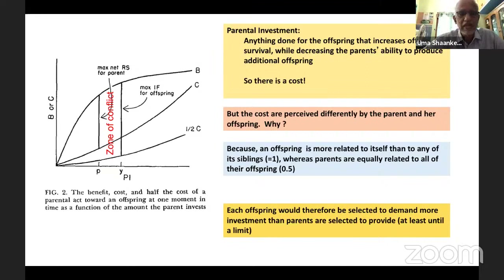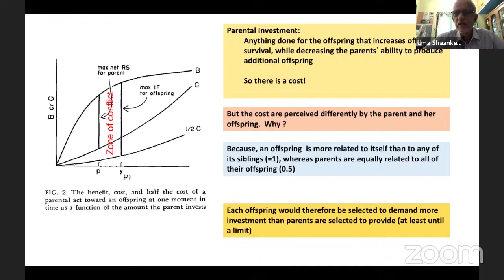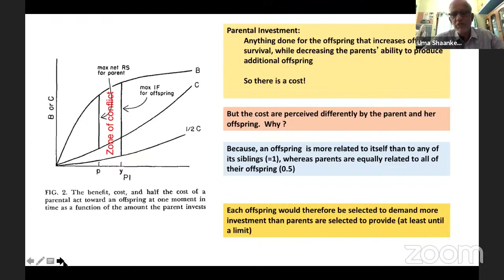In any benefit-to-cost trade-off, the maximum net reproductive success for the parent is at point P, whereas the maximum inclusive fitness for the offspring is at a different point, Y. The gap between P and Y constitutes the zone of parent-offspring conflict over resource allocation. In summary: while the mother is selected to provision each offspring a certain amount of resources, the offspring would always be selected to draw and mobilize much more than what the mother is selected to provide — herein lies the root of the conflict.